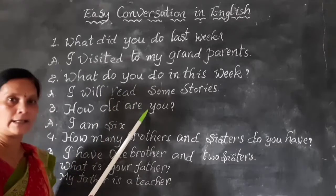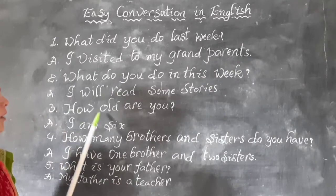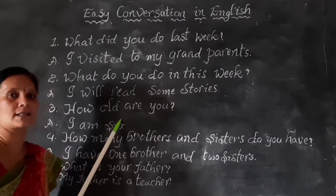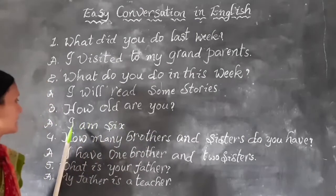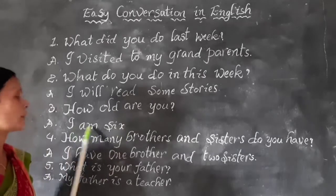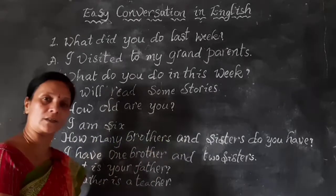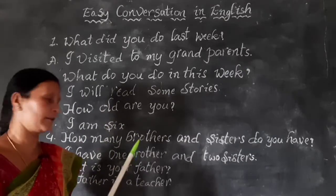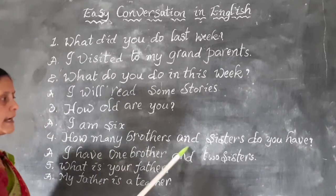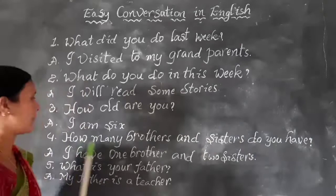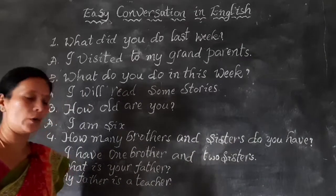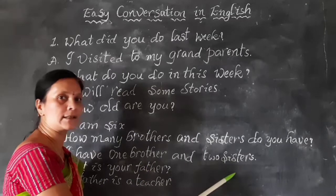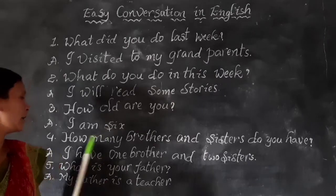The third one: How old are you? If you meet with your friends, you can ask: How old are you? You can answer: I am 6, or I am 6 years old, or I am 16, or I am 14. The fourth one: How many brothers and sisters do you have? You can answer: I have 1 brother and 2 sisters.